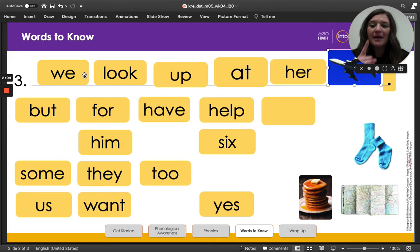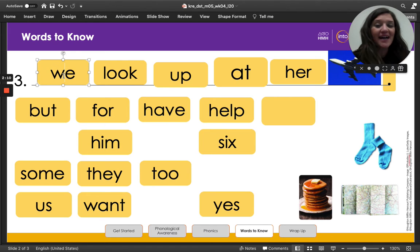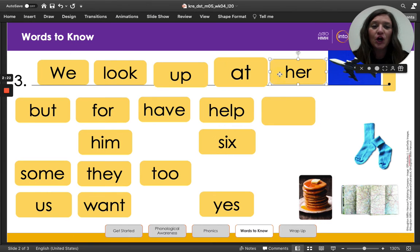I noticed that my very first word, the word we doesn't have an uppercase W. So we're going to fix that. Because it's the very first word in our sentence. Now it has a capital or uppercase W. So we look up at her plane.